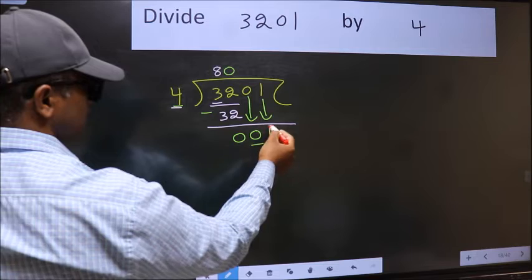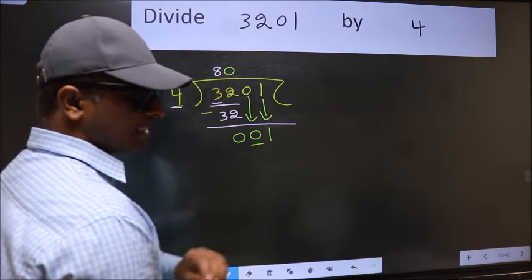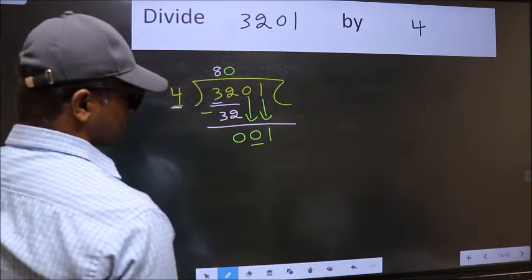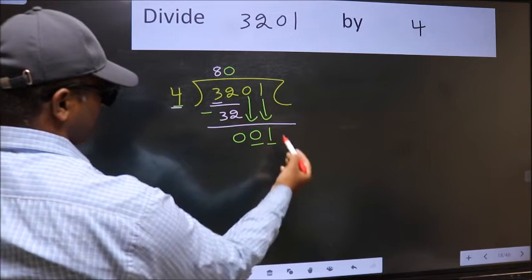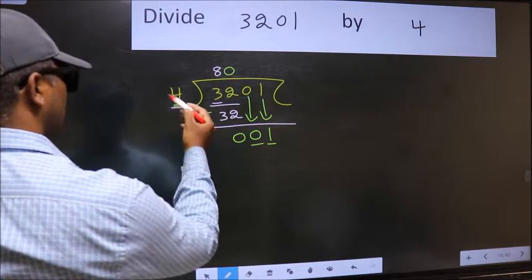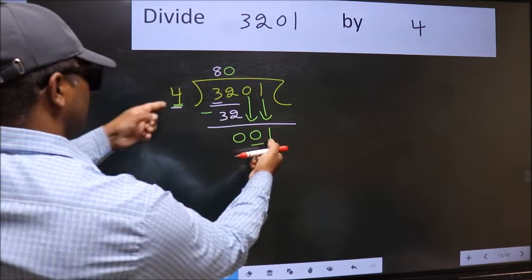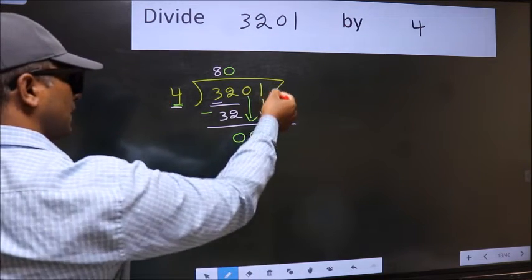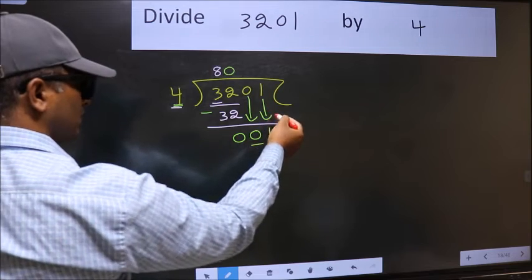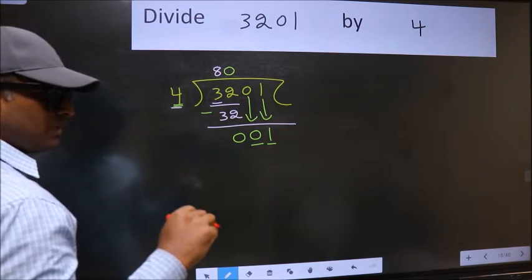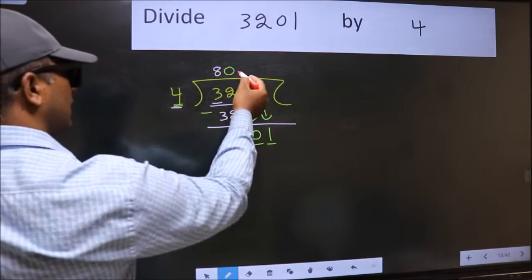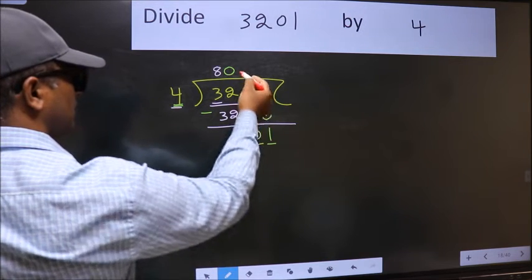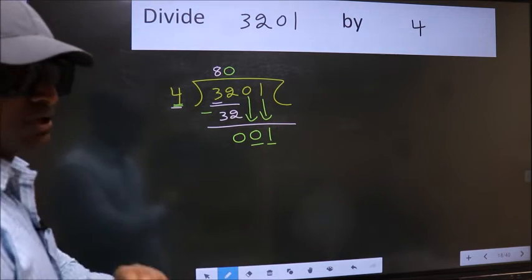After this step, the mistake happens. And the mistake is this: Here we have 1 and here 4. 1 is smaller than 4. And we do not have any more numbers to bring down. So, what many do is, they directly put dot, take 0, which is wrong.